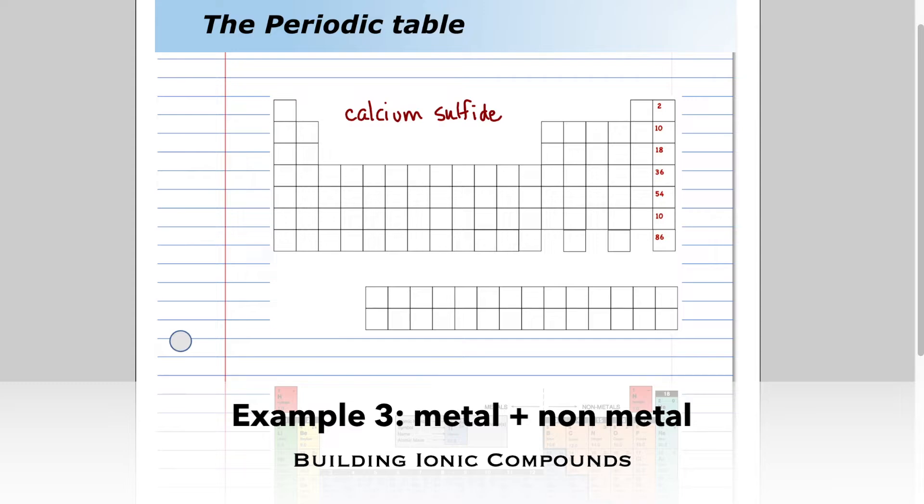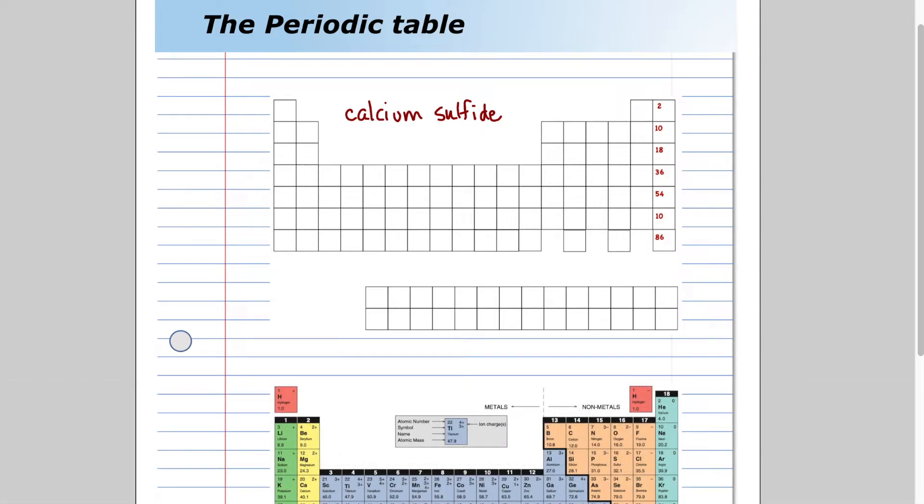The last example we'll look at is calcium sulfide. How do we come up with that ionic compound? Calcium has 20 protons and 20 electrons. The atom calcium is neutral. Calcium will lose two electrons and become the calcium ion.